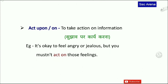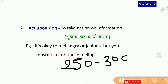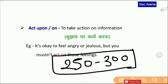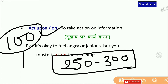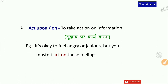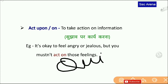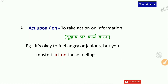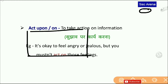दोस्तों, phrasal verbs की बात करें तो अगर आप CGL की practice कर रहे हैं तो roughly 250 to 300 phrasal verbs आपको याद करने होते हैं। अगर आप इन्हें याद कर लेते हैं तो आपको English में prelims या mains में दिक्कत नहीं होती। इन 300 में से 100 तो easily याद हो जाएंगे। बाकी 100 थोड़ा दिक्कत देते हैं — पर panic नहीं करना, मेरे साथ बने रहना। मैंने phrasal verb पर quizzes भी दिये हैं जिनका link description में और video में दूँगा।